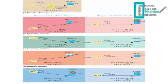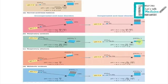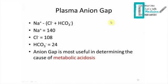Here are some diagrams to illustrate compensation. In the normal state, we have baseline CO2 and bicarbonate. In respiratory acidosis, CO2 increases, so the kidney compensates by increasing bicarbonate. In respiratory alkalosis, CO2 decreases, so the bicarbonate also decreases to compensate. You can read through the remaining examples in the diagrams.